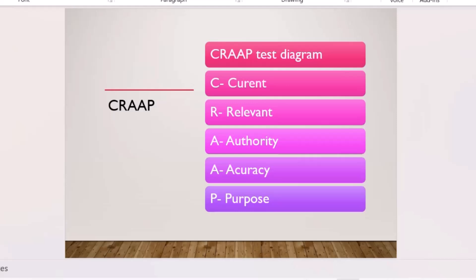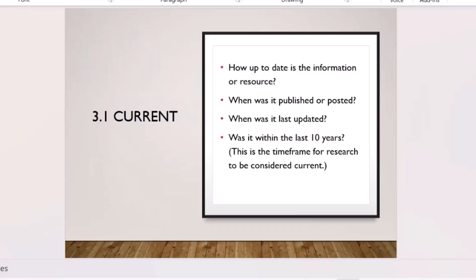Journal articles are usually academic and don't need the CRAAP test, but if you have too many you can use authority — who wrote it — to focus on the most prominent authors in your field. When you're unsure if a source is academic, use the CRAAP test. First, check Currency — is the article current? Lecturers generally prefer sources within the last 10 years.